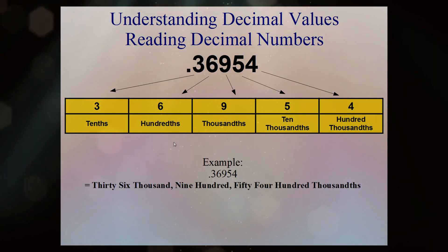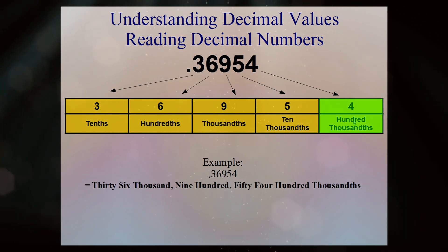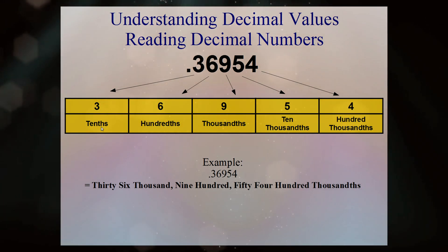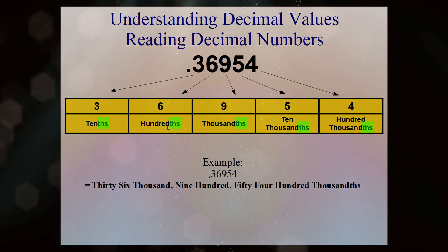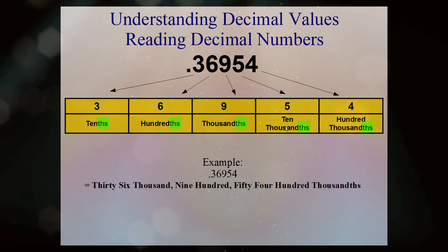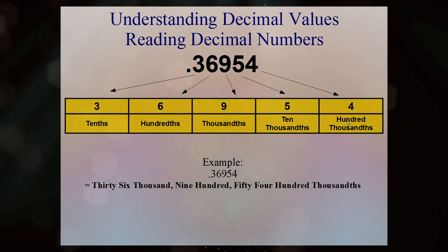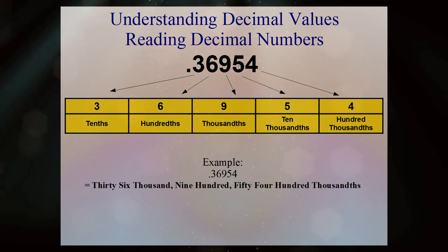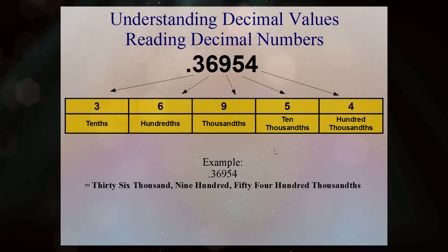Depending on how many numbers are in the decimal number — this has five numbers: one, two, three, four, five — if we look at our chart the biggest one is the hundred-thousands spot. Something to remember is that all these values have 'ths' after them: tens becomes tenths, hundreds is hundredths, thousands is thousandths, ten-thousands is ten-thousandths, hundred-thousands is hundred-thousandths. Because this has five digits and the largest is hundred-thousands, this number is thirty-six thousand nine hundred and fifty-four hundred-thousandths.